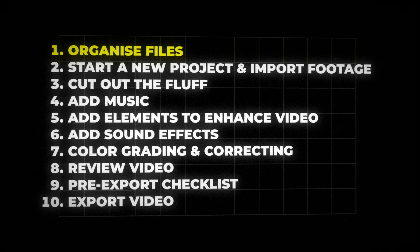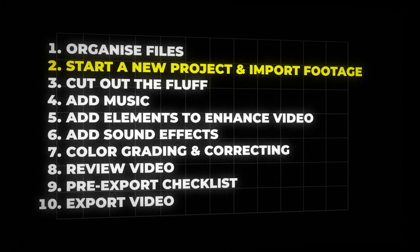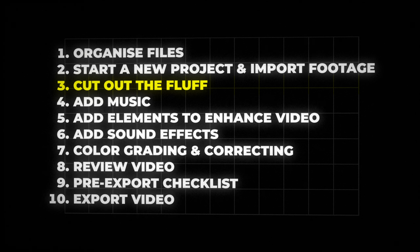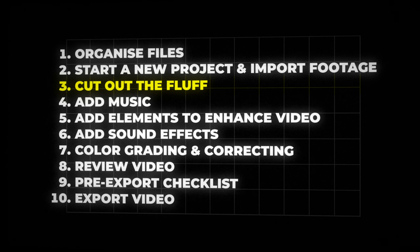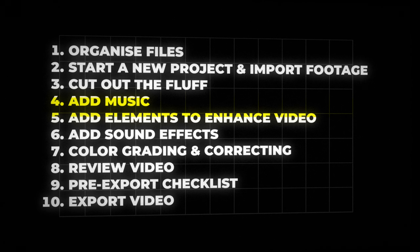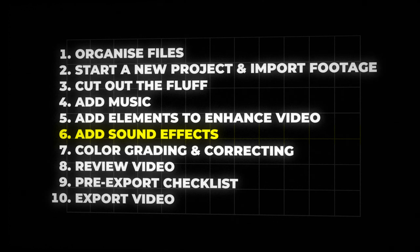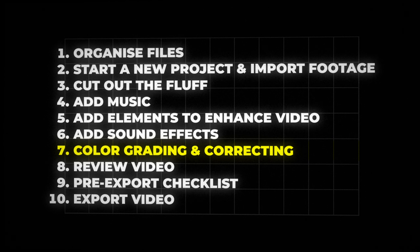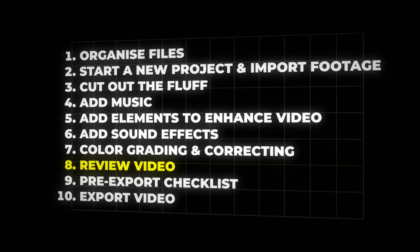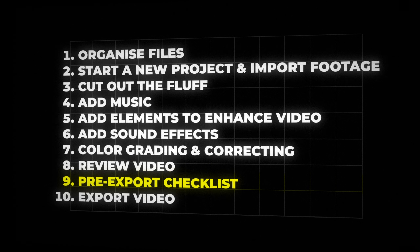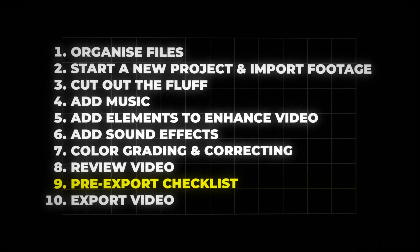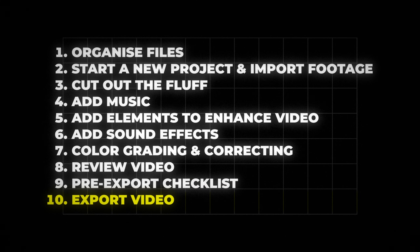So that's it — these are the 10 steps I go through to edit my YouTube videos and client videos. To recap: first, organization; second, starting a new project and importing footage; third, adding to the timeline and cutting out mistakes, pauses, and trimming the fat; fourth, adding music; fifth, adding supplemental elements to tell your story better; sixth, adding sound effects; seventh, color grading and color correcting if needed; eighth, watching back for mistakes; ninth, going through a pre-export checklist; and tenth, exporting with the right settings. If you've done all 10 of these, you have a pretty good chance of making an almost perfect edit.